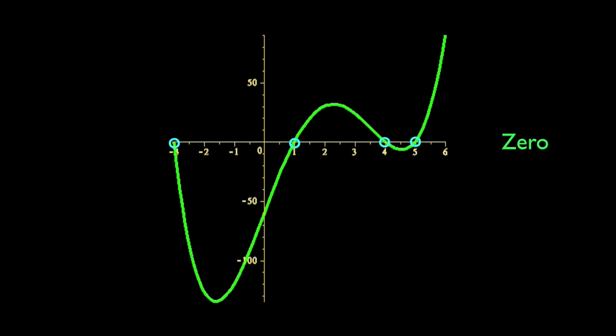When the value is 0, the points are x-intercepts, and we call the x-values, which are part of the domain, roots. This function's roots are at negative 3, 1, 4, and 5.